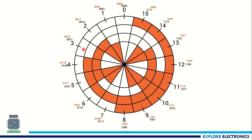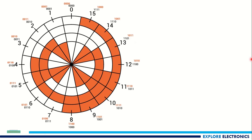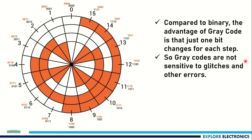For example, 2 is 0011 and 3 is 0010 in gray code. Similarly, you can compare any two successive numbers and you will find only one difference. The advantage of gray code is that it is less prone to errors — gray codes are not sensitive to glitches and errors because of only one bit change compared to the previous value.